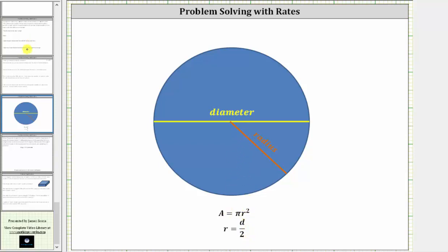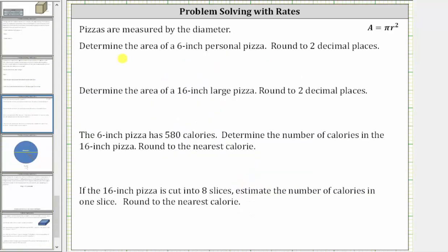Going back to our question, the six inch personal pizza has a diameter of six inches, and therefore d is equal to six inches. The radius r is equal to half of the diameter, or half of six inches, which is three inches.